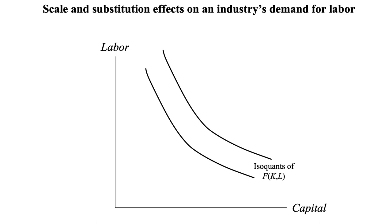Here we are looking at isoquants for the industry — say agriculture — which are the various combinations of capital and labor that would produce the same amount of food. Let's begin at the green square and then add some automation to the industry. The industry ends up at the blue dot. I have deliberately drawn this so it is difficult to see whether there is more or less labor, because it can go either way. Geometrically, it is the question of whether the blue dot is above or below the green square.